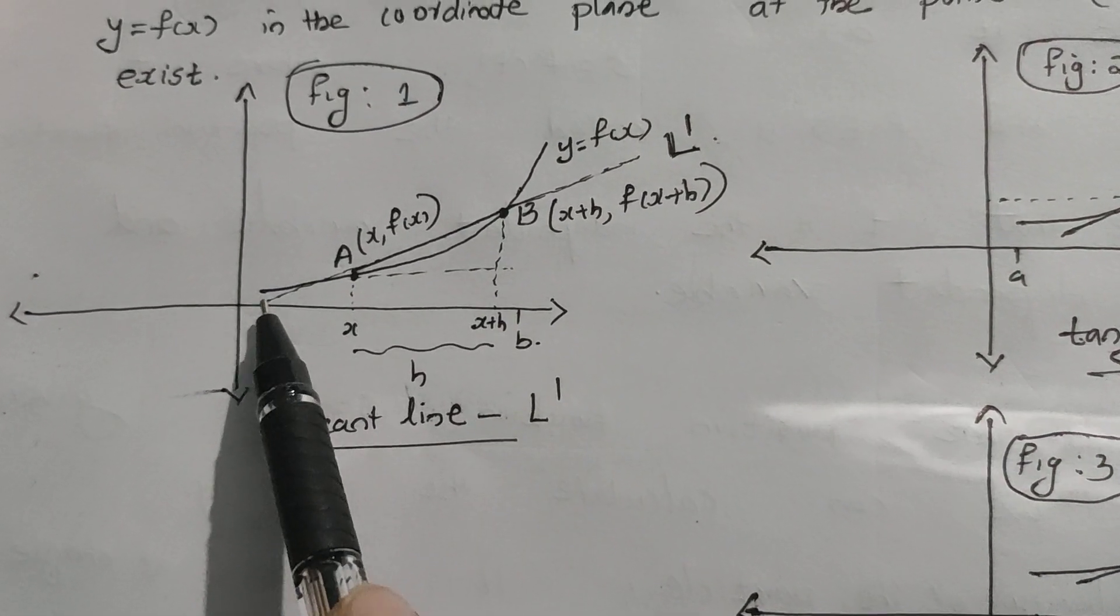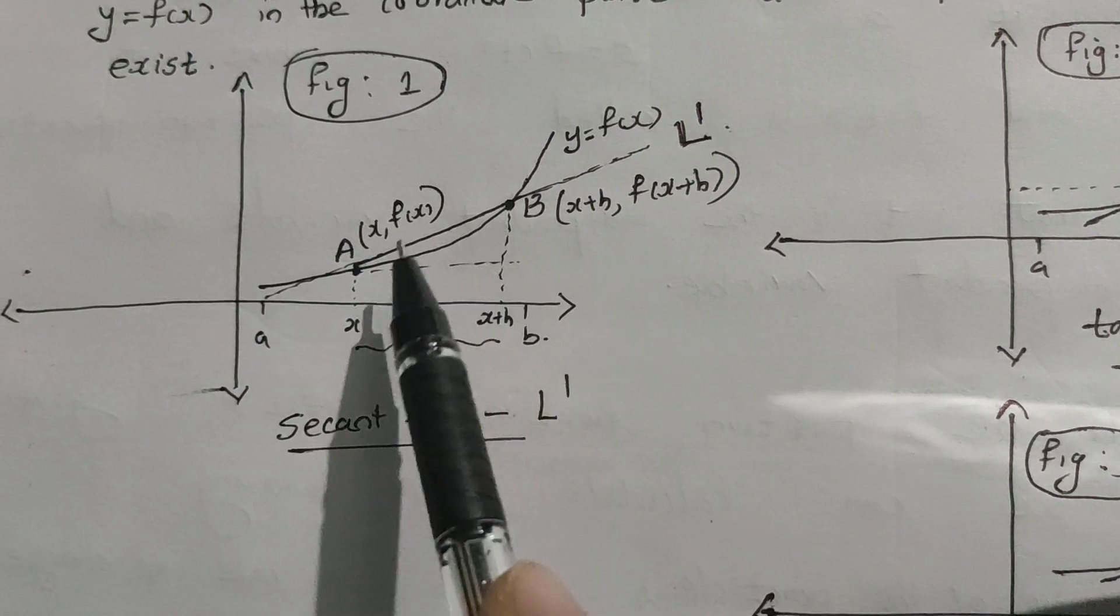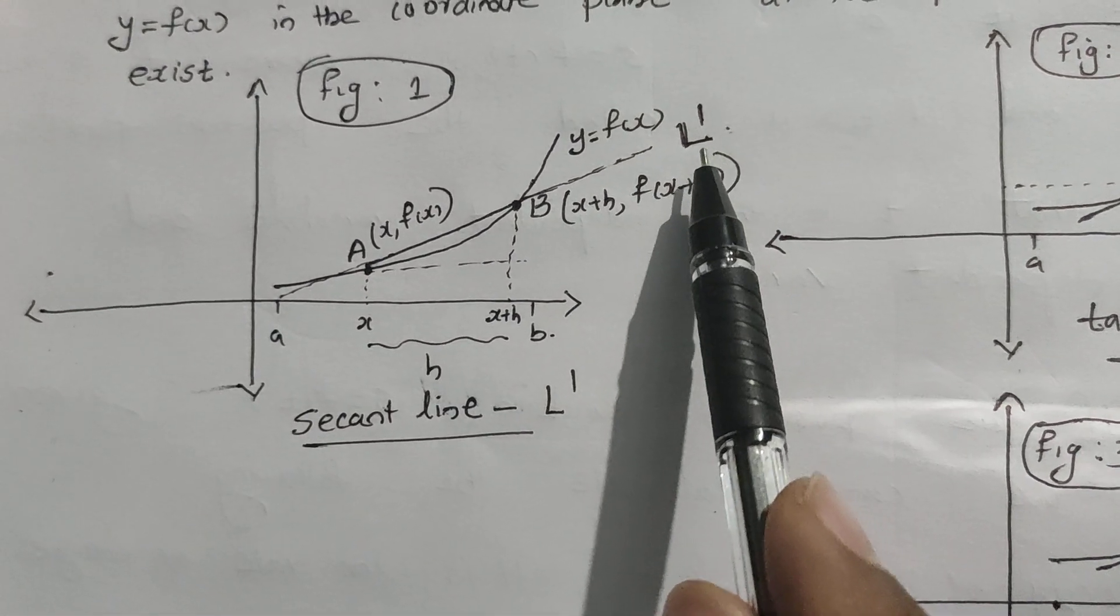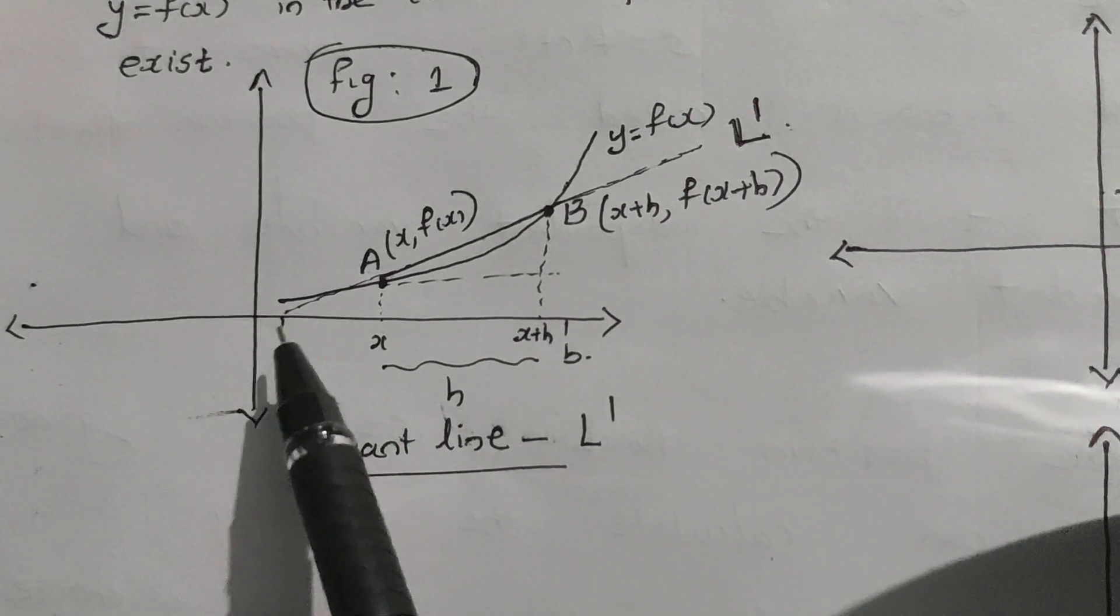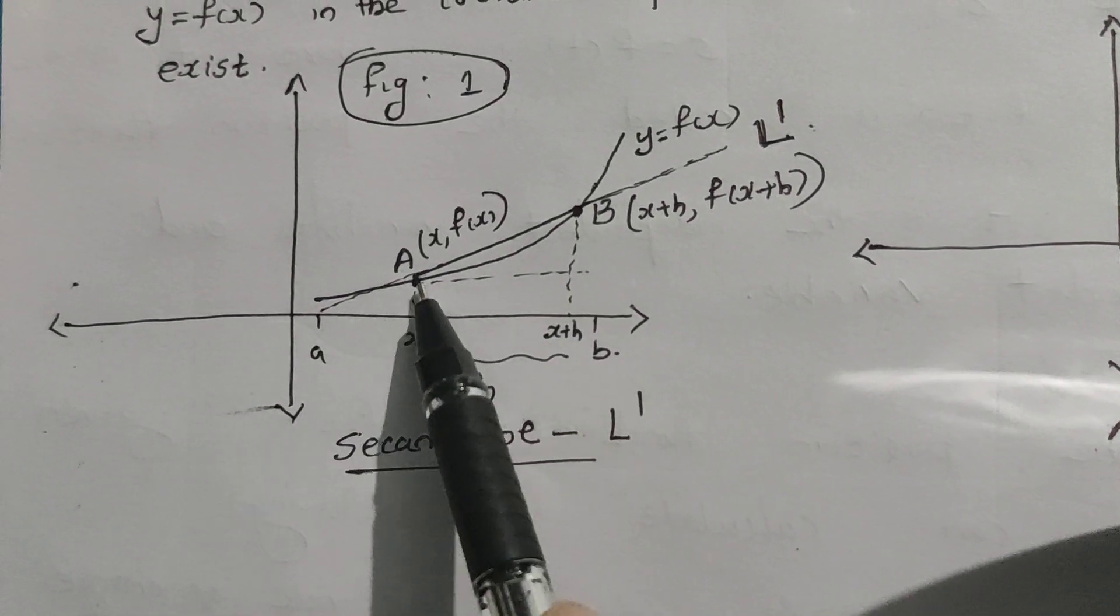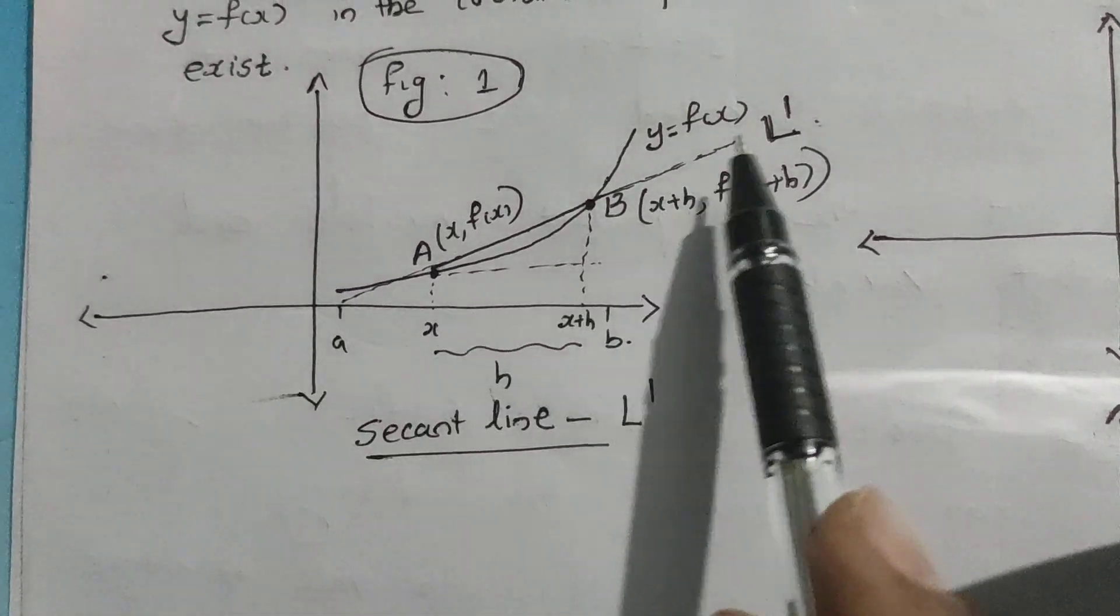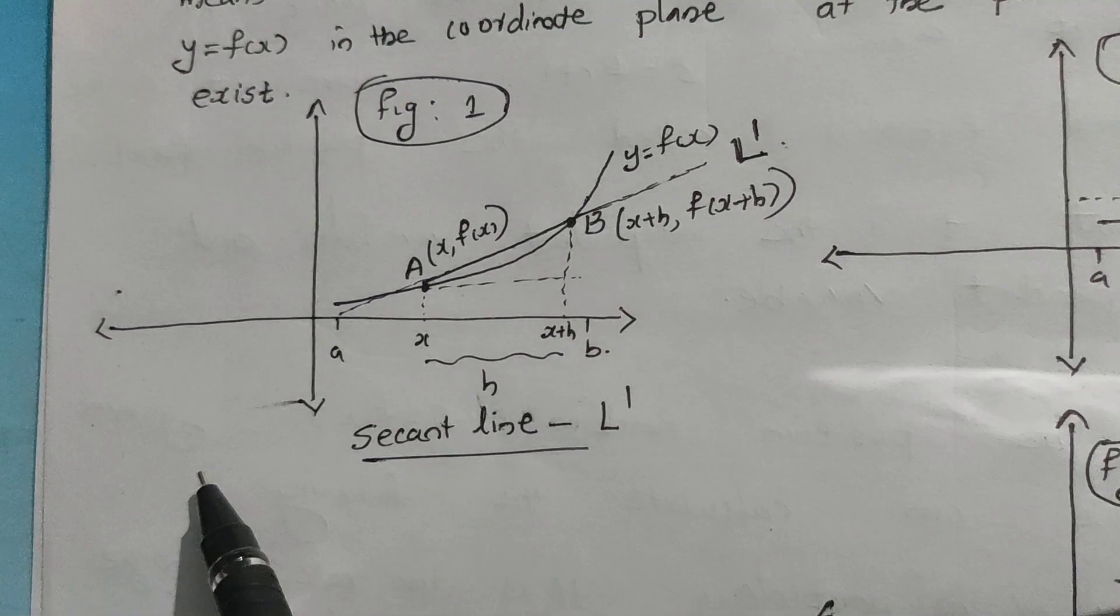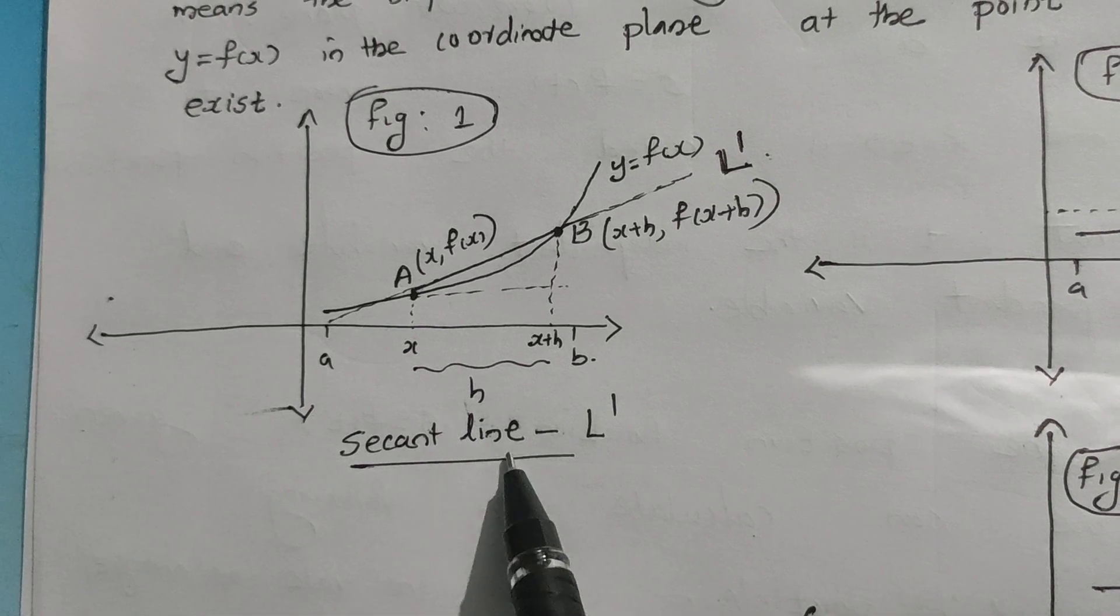What I am doing is joining points A and B with a secant line. Secant line means a line that passes through the curve and touches at two points. The secant line L' passes through A and B at (x+h, f(x+h)).